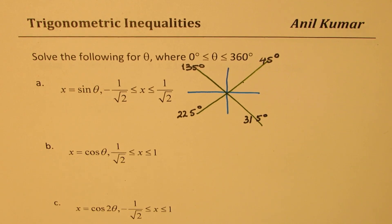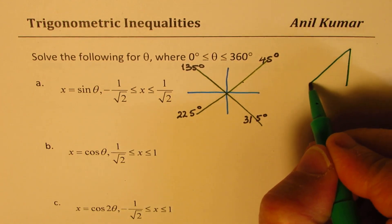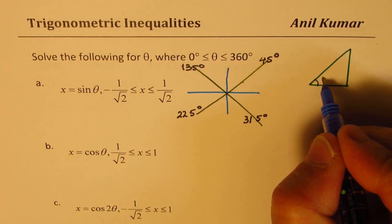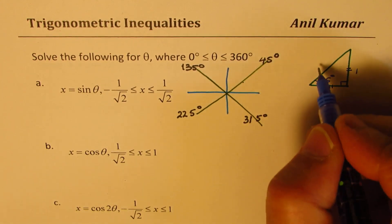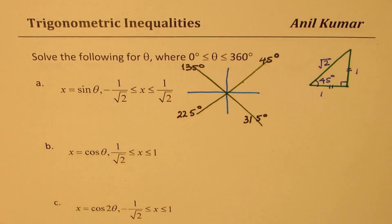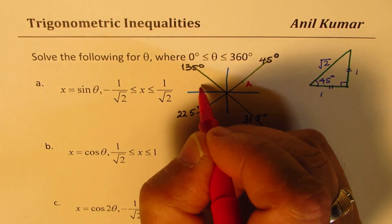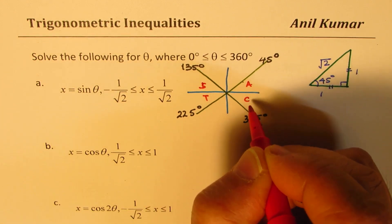How did I get 45 degrees? I used a special triangle which we are going to use throughout. If the angle is 45 degrees, it is an isosceles right triangle with sides 1, 1, and hypotenuse square root 2. So both sine and cosine equal 1 over square root 2. Remember the CAST rule: all trig functions are positive in quadrant 1, sine is positive in quadrant 2, tan in quadrant 3, and cosine in quadrant 4.